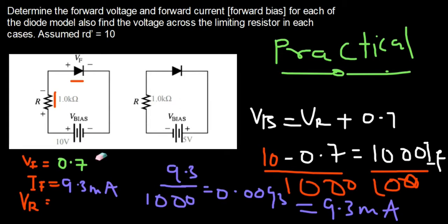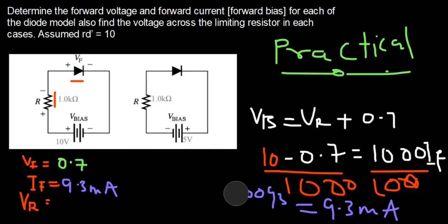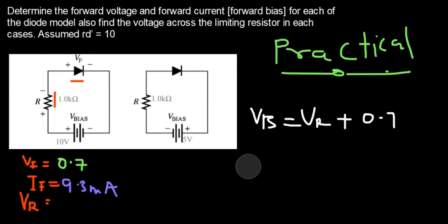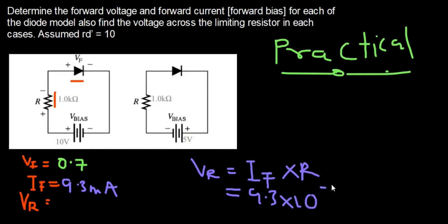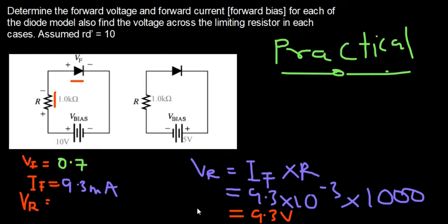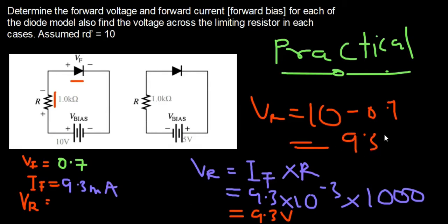Now let's find the voltage drop across the resistor. VR = IF × R = 9.3 × 10⁻³ × 1000 = 9.3V. Alternatively, VR = VB - VF = 10 - 0.7 = 9.3V. So VR = 9.3V for the practical diode.